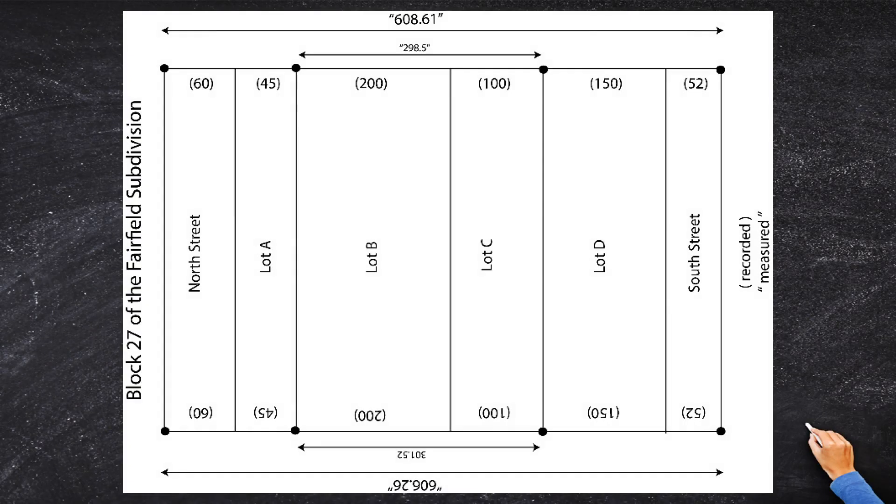All right. We've got one block which is bounded by two streets. And within that block, there are four different lots. And this is really going to give us fits because each lot is a different size. So you can't just divide by four and distribute the error. You've got to do some arithmetic.